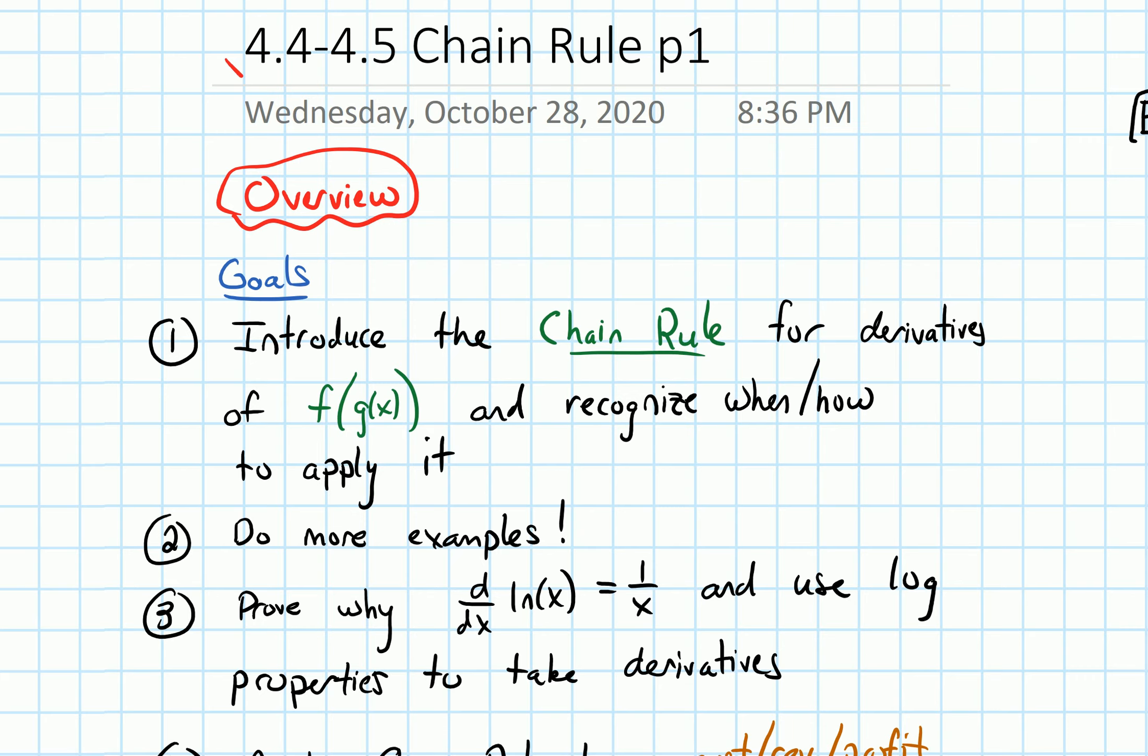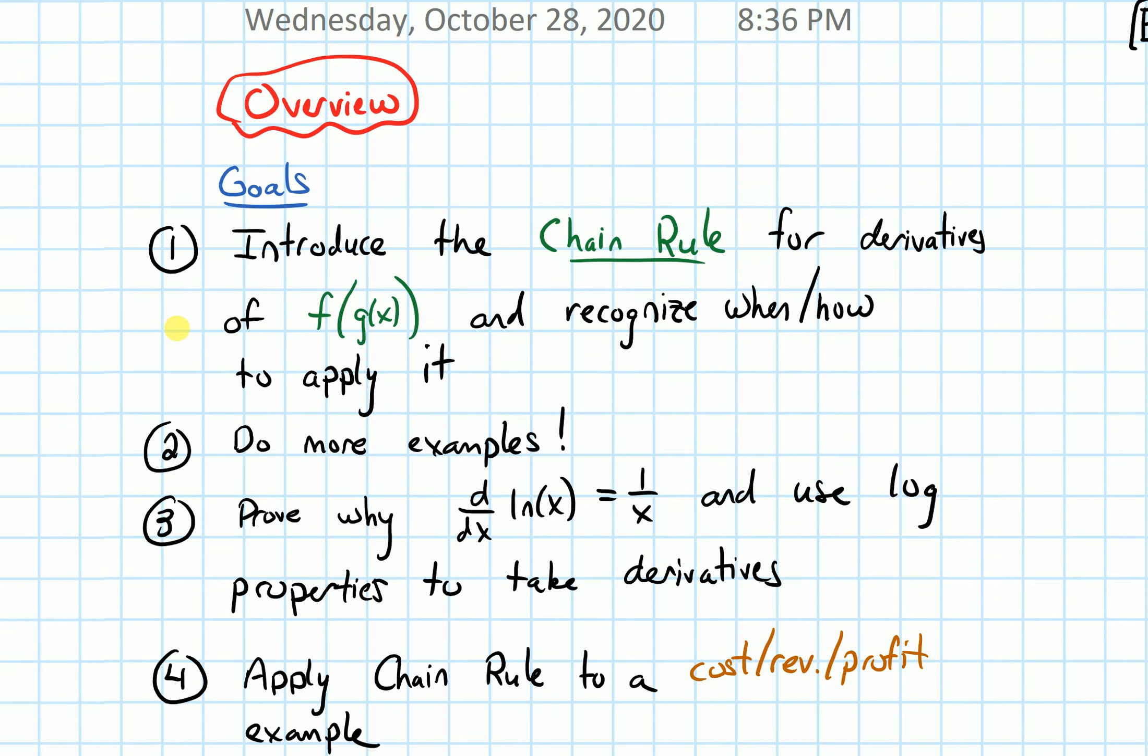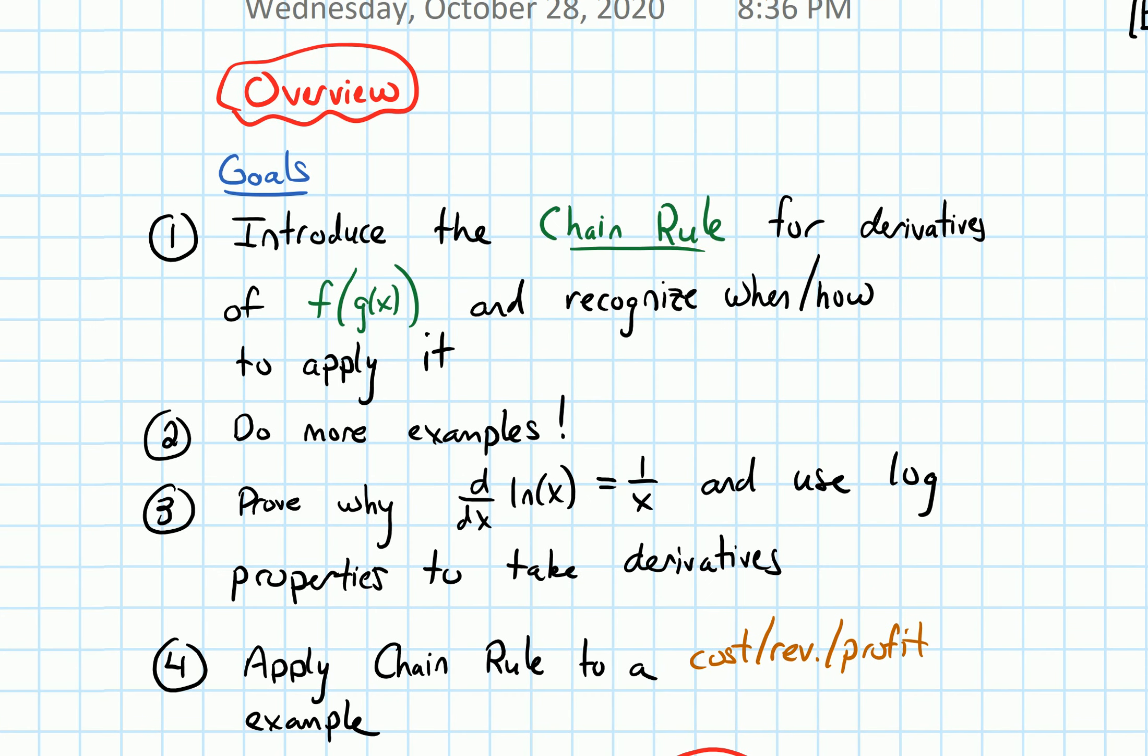Our goals for this section are: first, we'll introduce what the chain rule is. It's a rule that helps us take derivatives of functions that look like f of g of x - a composition of functions, a function inside of another function - and recognize when and how to apply it.